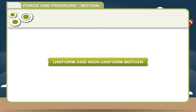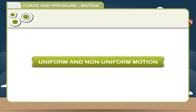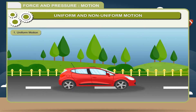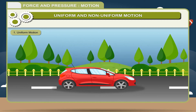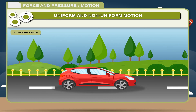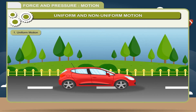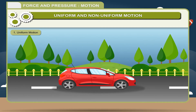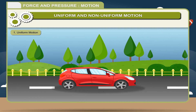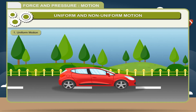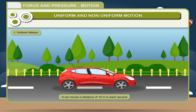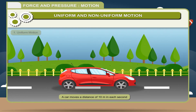Uniform and non-uniform motion. Uniform motion: when an object moves in such a way that it covers equal distance in equal interval of time, it is called uniform motion. During uniform motion, the body moves with constant speed throughout its journey. Example: a car moves a distance of 10 meters in each second.